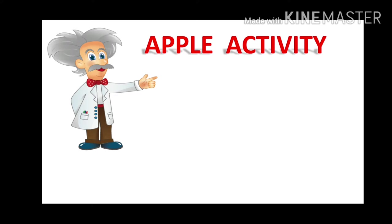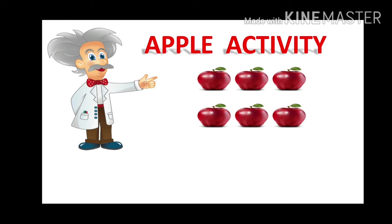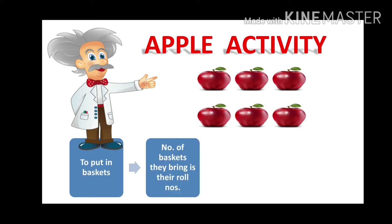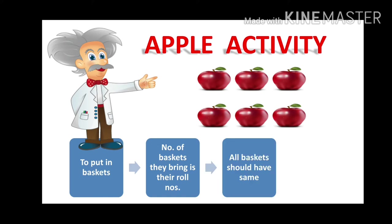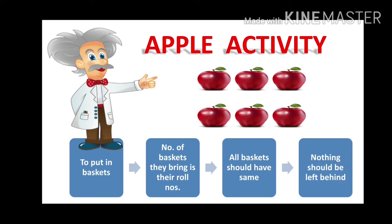Mr. Matty wants to show you an apple activity. He has got 6 apples and he wants to put them in the baskets. The number of baskets they bring is their roll number. So roll number 1 will get 1 basket, roll number 2 will get 2 baskets. All the baskets should be filled in the same way — every basket should have the same number of apples, and nothing should be left behind. There should be no apple left behind.